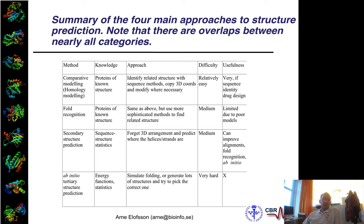The categories are divided into comparative modeling — homology modeling is another word for it. It basically tells you that you use a homologous template and model a structure on it. That's very useful if the sequence similarity is high. It's such a standard practice, used all over — it's like BLAST; everybody uses it.